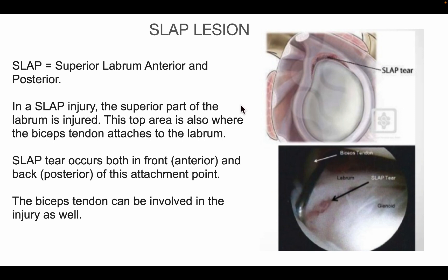A SLAP lesion stands for Superior Labrum Anterior and Posterior. In SLAP injuries, the superior part of the labrum is injured. The top area is also where the biceps tendon attaches to the glenoid labrum. SLAP tears occur both anteriorly and posteriorly at the attachment point, and the biceps tendon can also be involved in the injury.